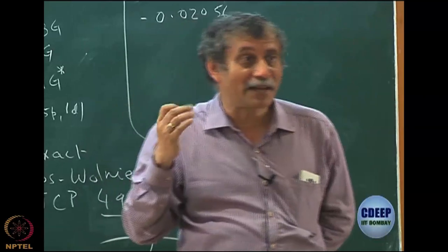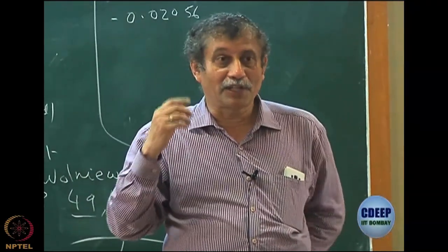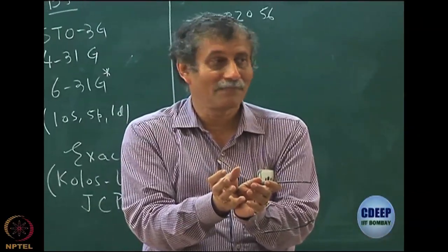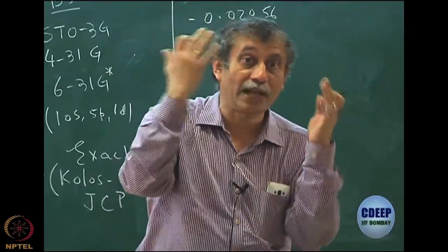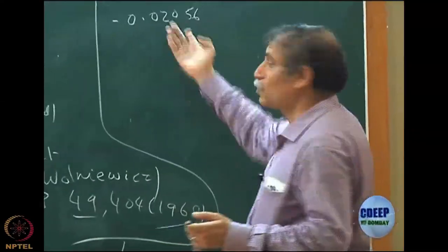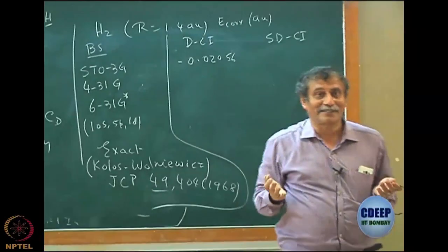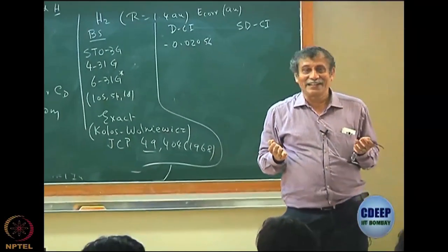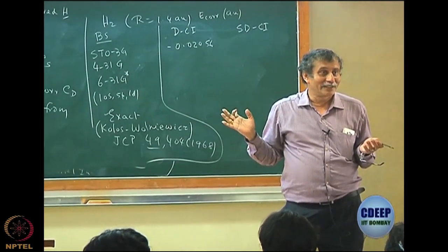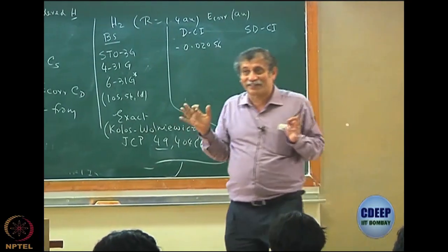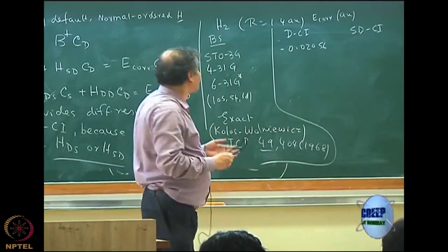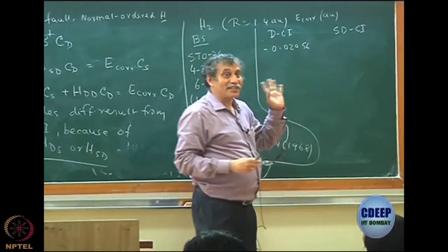It is very dangerous to make a mistake in atomic units, because chemistry ultimately takes place in kilojoules. A value of 0.02 atomic units is a very large number — in terms of kilojoules you are already talking about 50 kilojoules. With such an error, no chemistry can be done.